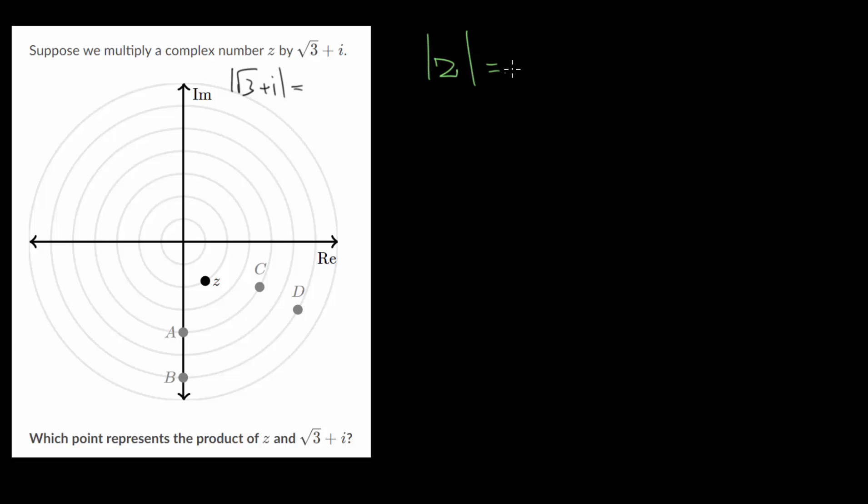We can take root 3 plus i and put it in absolute value bars. The formula for the magnitude of a complex number is the square root of the real part squared plus the imaginary part squared. In this one we get root 3 squared which is just 3 and 1 squared is 1. We get the square root of 4 which we know is 2.